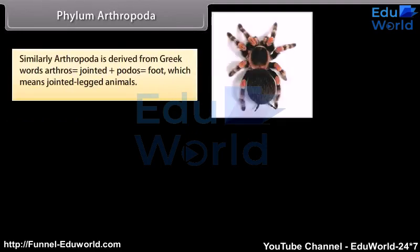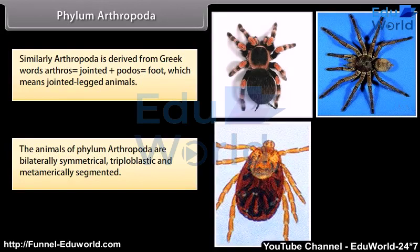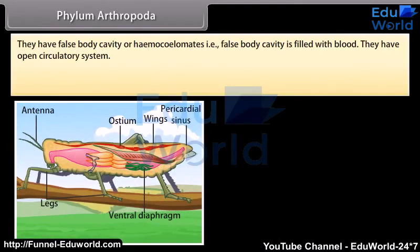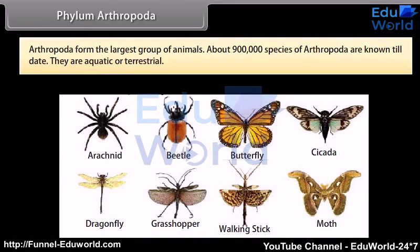Phylum Arthropoda. Arthropoda is derived from Greek words: arthros, meaning jointed, plus podos, meaning foot — which means jointed-legged animals. The animals of Phylum Arthropoda are bilaterally symmetrical, triploblastic, and metamerically segmented. They have a false body cavity, or haemocoel — that is, false body cavities filled with blood. They have an open circulatory system. Their body is divided into two parts — cephalothorax and abdomen — or three parts: head, thorax, and abdomen. Arthropoda form the largest group of animals; about 9 lakh species of Arthropoda are known till date. They are aquatic or terrestrial.